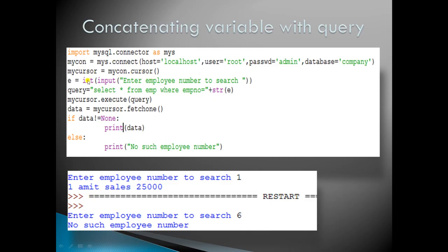The variable e stores the employee number to search, as an integer. The query is: SELECT * FROM emp WHERE empnumber = ' + str(e). The plus symbol is used to concatenate the variable, and we convert the integer to a string. Then we execute the query, and use mycursor.fetchone() to fetch only one record. If data is not None, print data; else print 'no such employee number'.